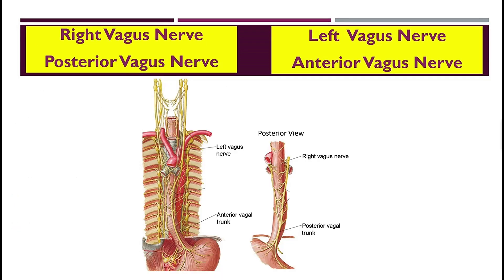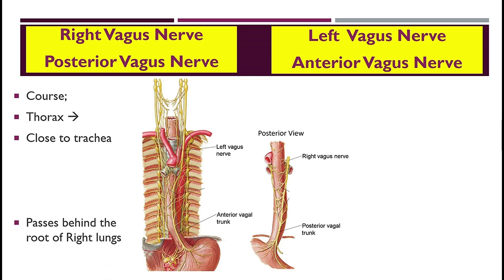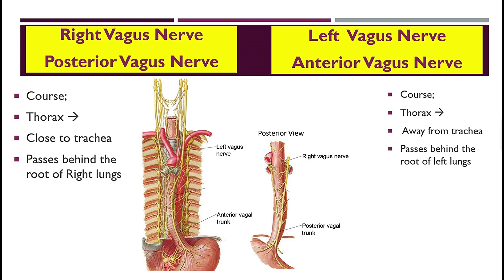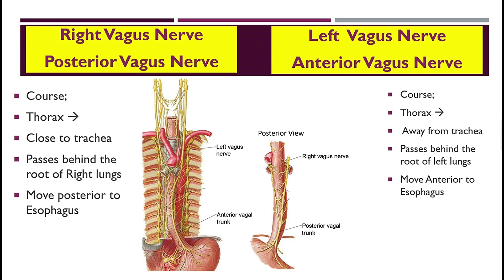To summarize differences between right and left vagal nerves: the right vagal nerve becomes the posterior vagal nerve and the left becomes the anterior vagal nerve. In the thorax, the right vagus is very close to the right side of the trachea and passes behind the root of the right lung; the left vagus is farther from the left side of the trachea due to major vessels and passes behind the root of the left lung. Then the left vagus descends anterior to the esophagus (anterior vagal nerve) and the right descends posterior to the esophagus (posterior vagal nerve). Both enter the abdomen through the esophageal hiatus.